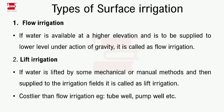Flow irrigation is where water from a higher level flows to a lower level under the action of gravity. The crop field is at a lower level, and water is supplied to that lower level by gravity. That is how we call it flow irrigation.